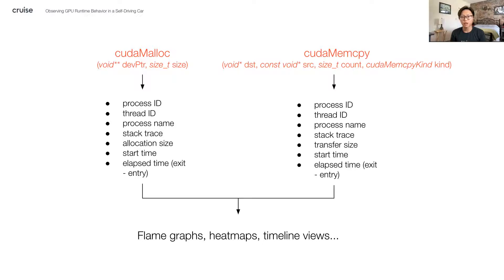Furthermore, by examining the contents of registers when these U-probes are hit, we can grab the allocation size or transfer size used. With all this data, we can generate powerful visualizations that can point us to potential areas of optimization in our code. With flame graphs, we can identify which components or code paths in our stack are allocating the most GPU memory, or which ones are spending the most time allocating memory.